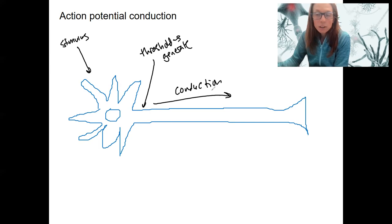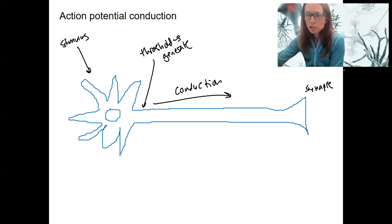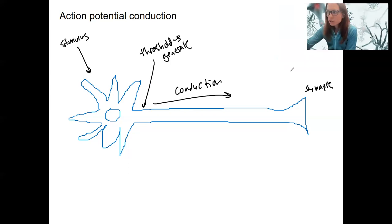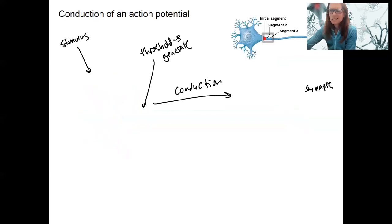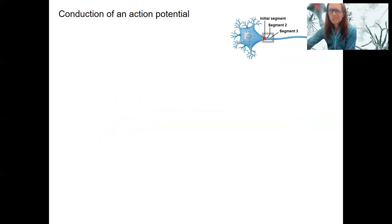We need to be able to get our electrical signal down that way, because this is where the synapse is, where our neuron is going to talk to another neuron, a muscle cell, a gland, whatever.